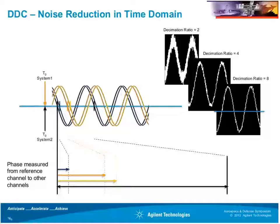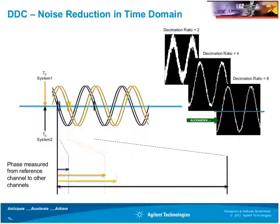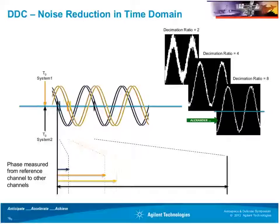You can also think about improvements in phase measurement resolution in the time domain. As the decimation ratio goes up — equivalently bandwidth goes down — the noise modulating the sinusoidal signal becomes smaller. Our peak-to-peak jitter and noise is less, and therefore when we draw a threshold in the time domain through the signal at a particular voltage level, we can better determine the crossings to make phase measurements. This is a depiction of how you'd define a phase measurement in the time domain, and with the reduced noise from using a digital down converter, you can calculate phase more accurately.